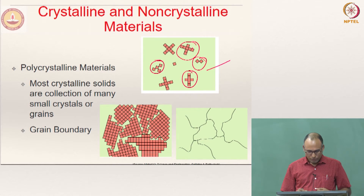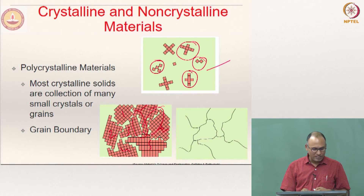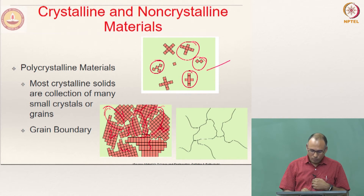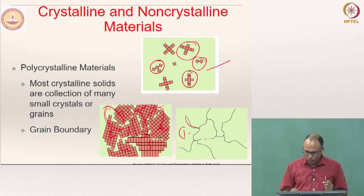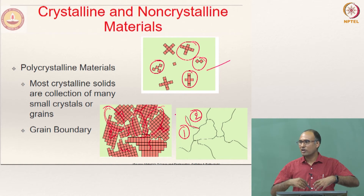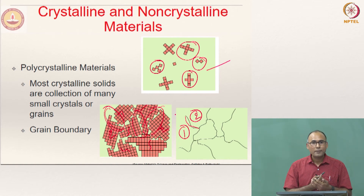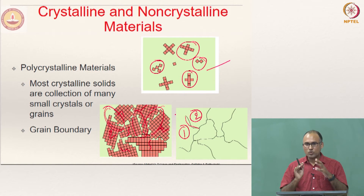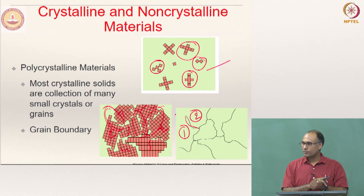When all of them meet together, you have incompatibility at that position. So this is crystal 1, 2, 3, 4, 5, 6. When crystal 1 and 2 are meeting, there is an incompatibility in terms of orientation. This is one grain and this is another grain — this is what you call a grain boundary. A polycrystalline material will have several grains, each one with their own orientation. Had it been a single crystal, it has one single orientation everywhere, with no grain boundary and no incompatibility between grains.